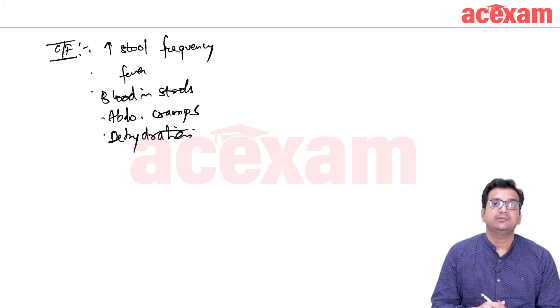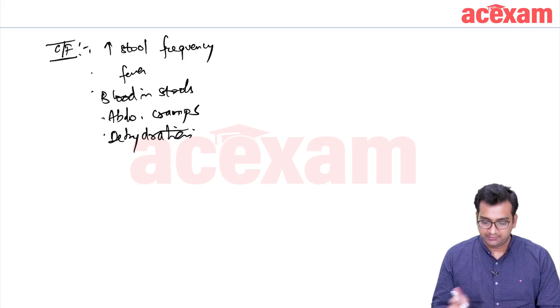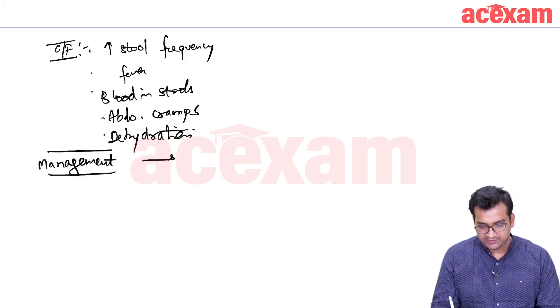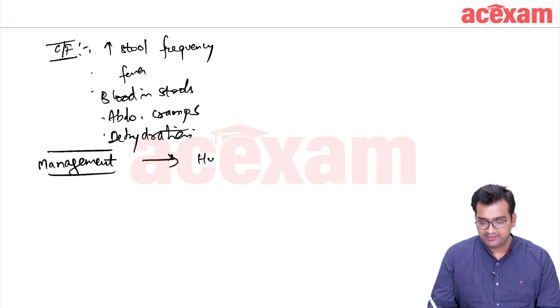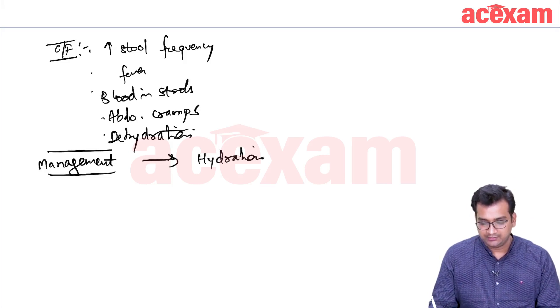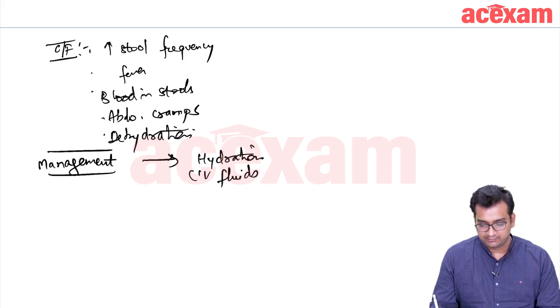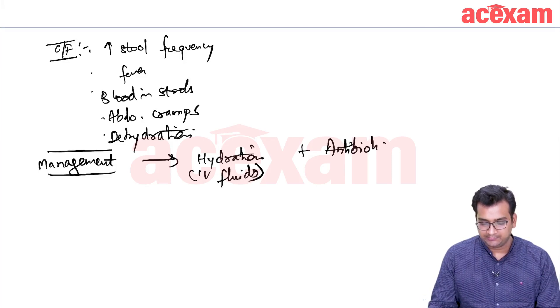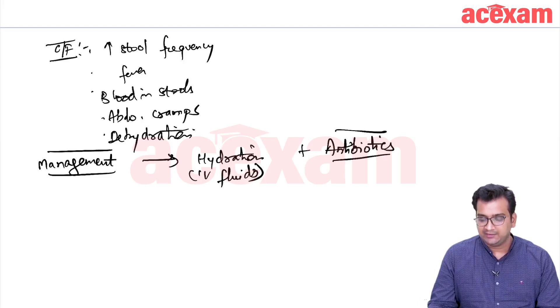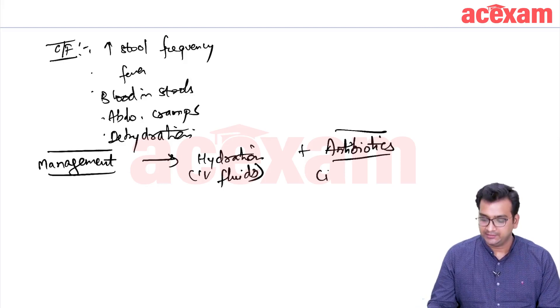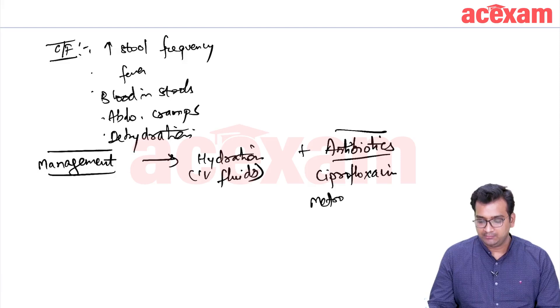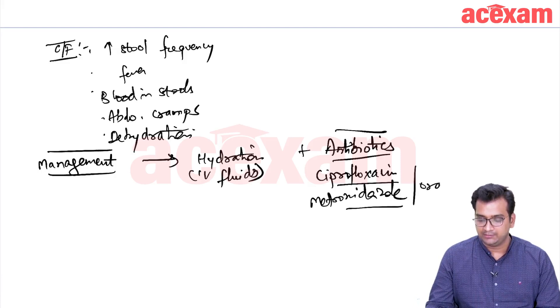The management of pouchitis is mainly medical management. Initially, we will hydrate the patient with IV fluids, and then we will start antibiotics. Which antibiotics are helpful in pouchitis? We have already discussed ciprofloxacin and metronidazole. We generally start oral ciprofloxacin and metronidazole.